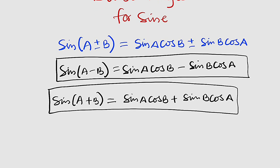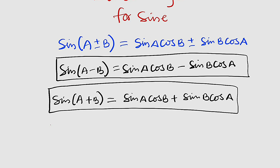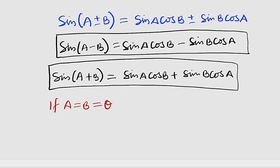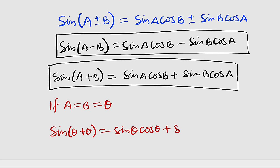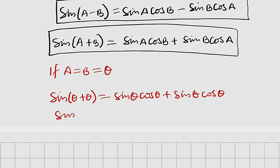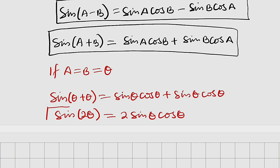Remember we are talking about double angle, meaning we have A equal to B. In the case where A equals B, we replace both A and B with theta. So this would be sine of theta plus theta, which is equal to sine of theta multiplied by cosine of theta, plus sine of theta multiplied by cosine of theta. Since we have two thetas, we have sine of two theta — the double angle — equal to two times sine of theta multiplied by cosine of theta. This is the formula for double angle for sine.